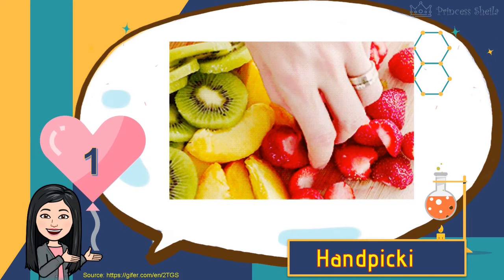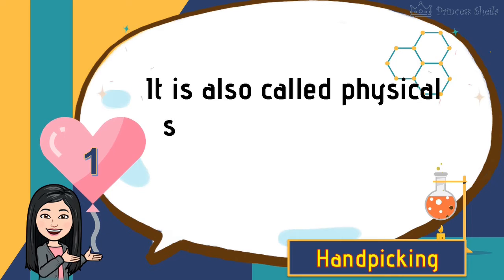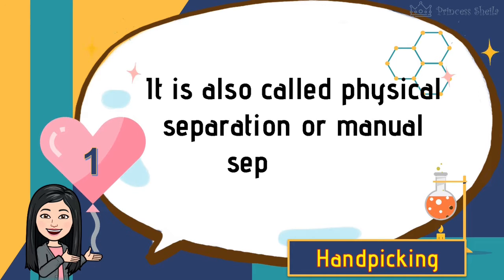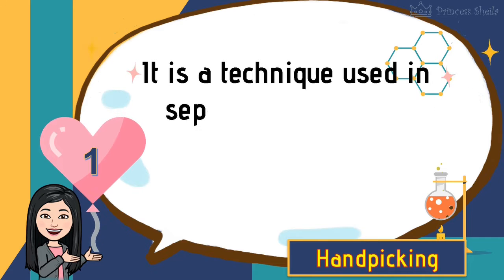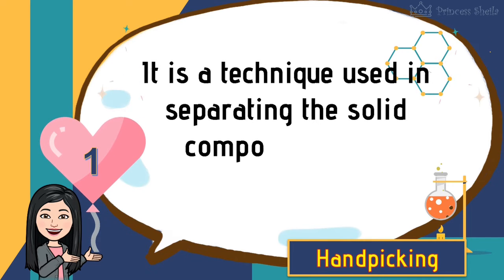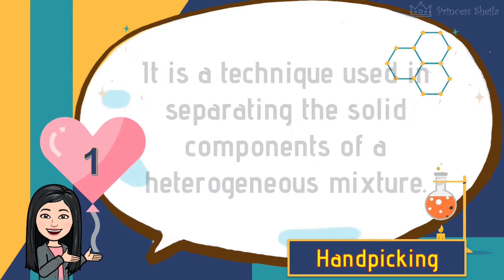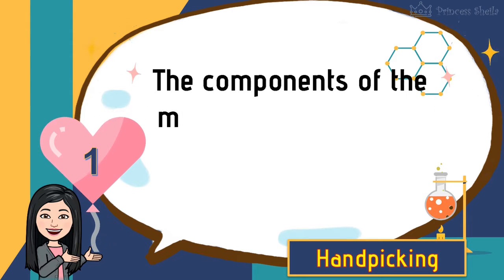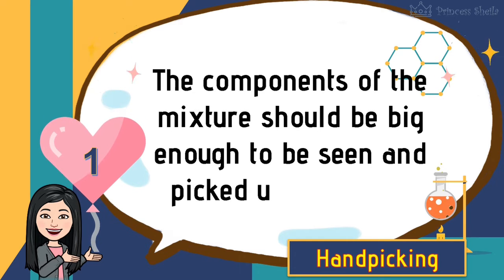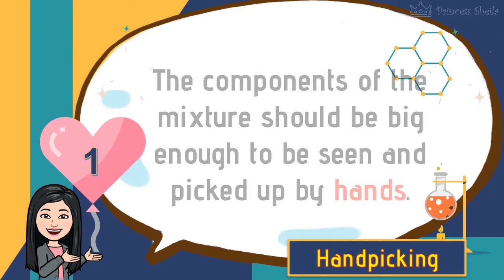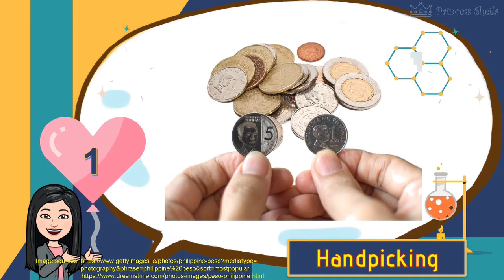First is hand picking. It is also called physical separation or manual separation. It is a technique used in separating the solid components of a heterogeneous mixture. The components of the mixture should be big enough to be seen and picked up by hands, like when you count and sort out your coins.